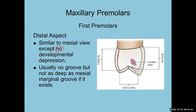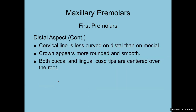Now turning the tooth around to look at the distal: it's similar to the mesial view, except there is no developmental depression and usually no groove going over the distal marginal ridge. There is no groove going over the marginal ridge and no mesial developmental depression, because it's called the mesial developmental depression — there's no distal one. The cervical line is less curved on the distal than on the mesial, and the crown appears more rounded and smooth.